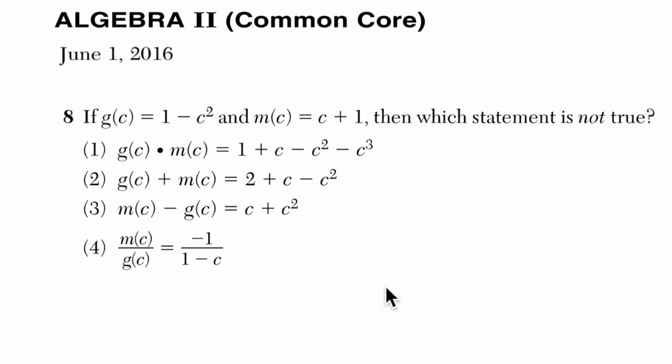Okay, so in this problem, we're asked to find which statement is not true, so we want to pay attention to that. I often lose track of it. And we're told that there's this one function, g of c, which equals 1 minus c squared, and m of c, which is c plus 1. In the first choice we're multiplying the two of them, then we're adding and subtracting and dividing.